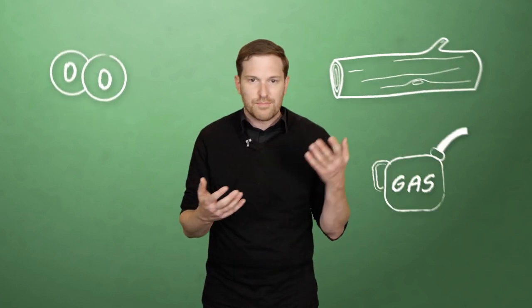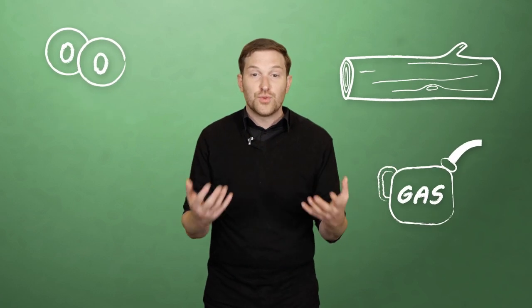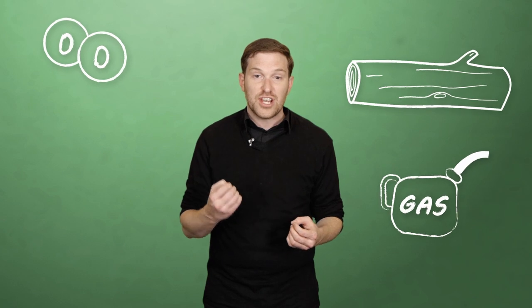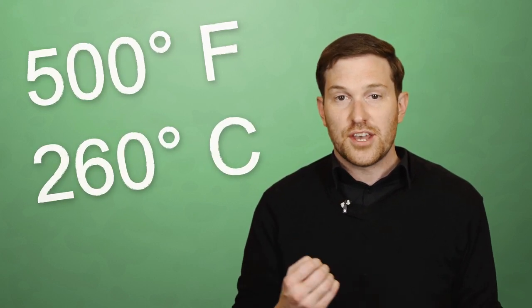First let's talk about fire. Fire is the result of a chemical combustion reaction, typically between oxygen and some sort of fuel like wood or gasoline. For the reaction to occur, the fuel has to reach its ignition temperature. For wood that's about 500 degrees Fahrenheit or 260 degrees Celsius.